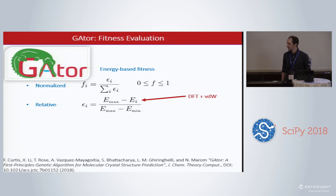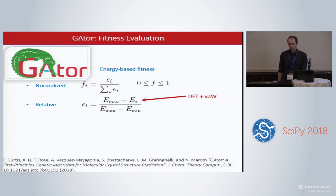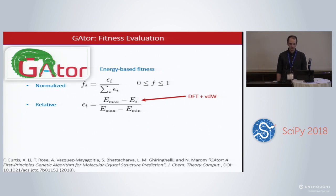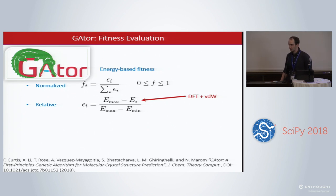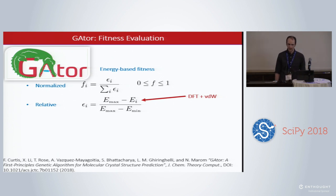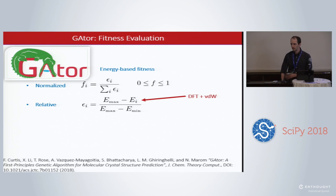To this end we developed Gator, a genetic algorithm specifically tailored for molecular crystal structures. I won't go into the details of the genetic algorithm here except to say that, like Darwinian evolution, the fittest structures will pass on their genes.